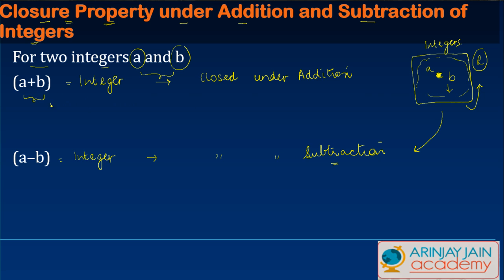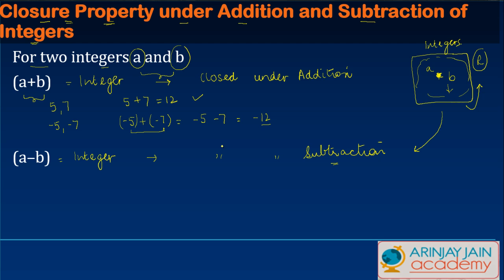If a and b are 5 and 7, then 5 plus 7 equals 12, which is also an integer. Now if instead we have minus 5 and minus 7, we get minus 5 plus minus 7. When we add two integers of the same sign, we get minus 5 minus 7,